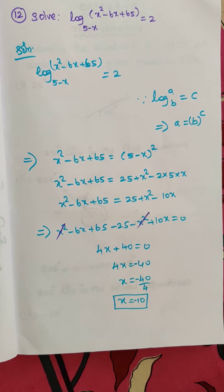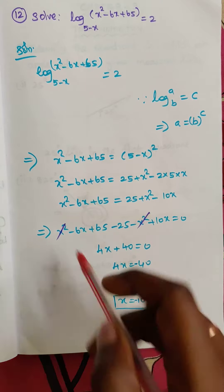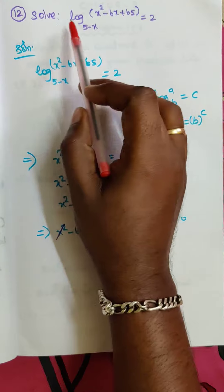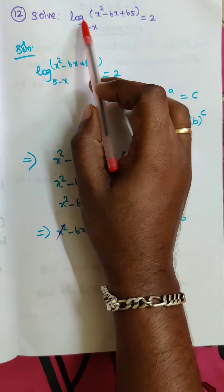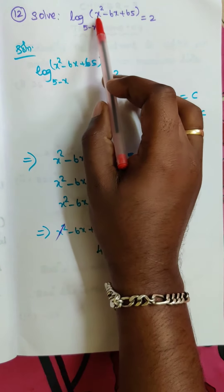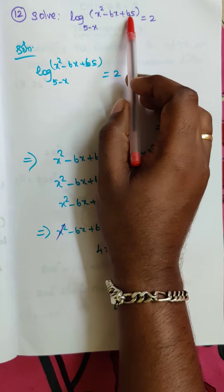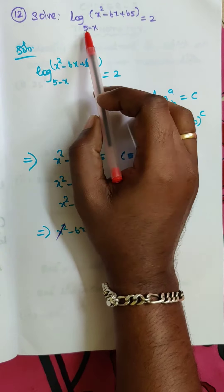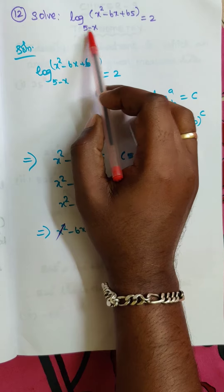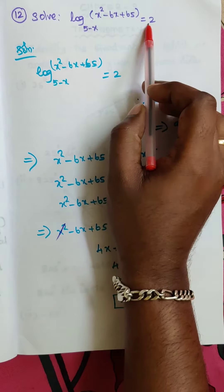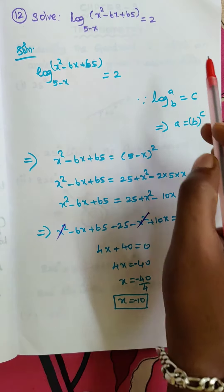Hi students, this is Nish here. Today we are going to discuss exercise 2.12, question number 12: solve log of (x² - 6x + 65) to the base (5 - x) is equal to 2.